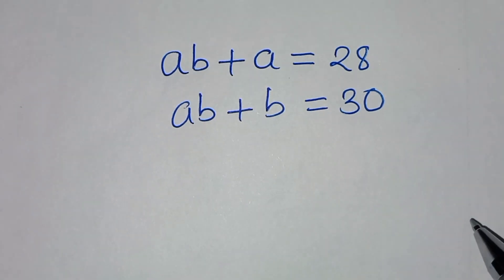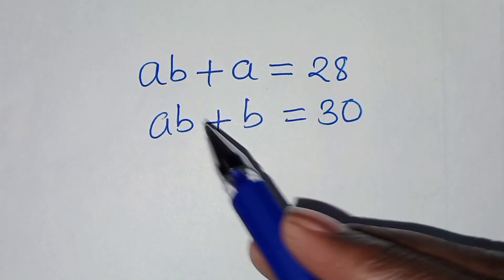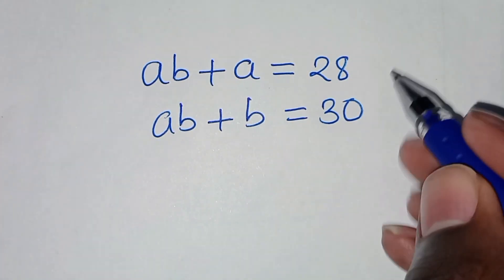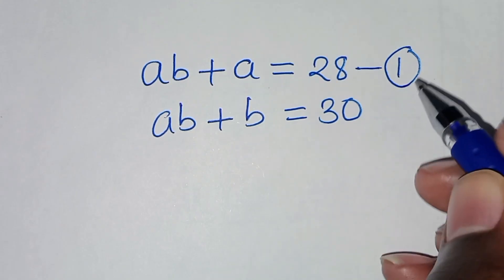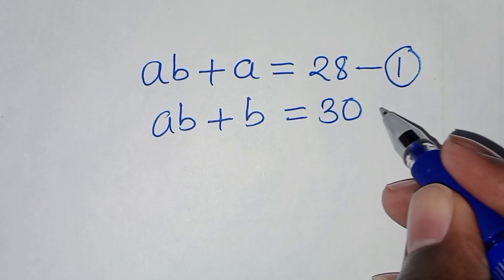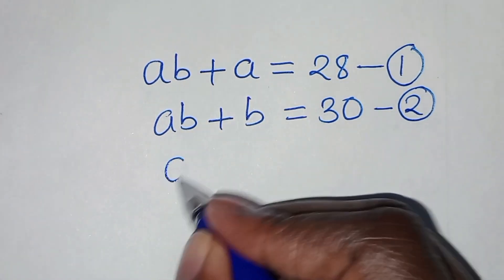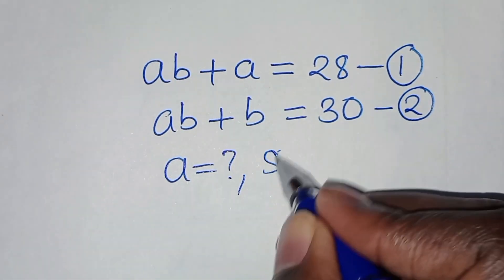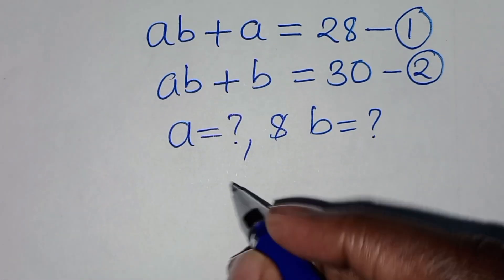Hello everyone, you're welcome to solve this nice algebra problem. We have ab + a = 28, let's call this equation 1. Then a + ab + b = 30, let's call this equation 2. So what is the value of a and what is the value of b?